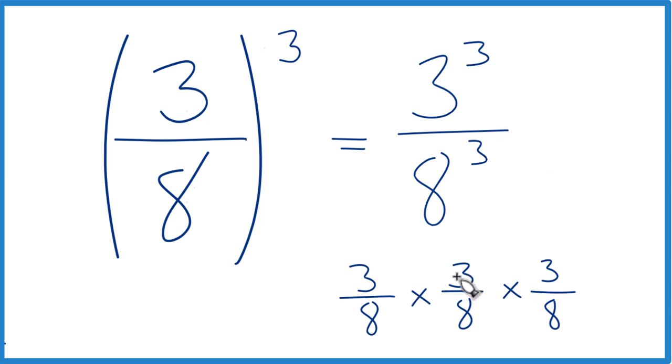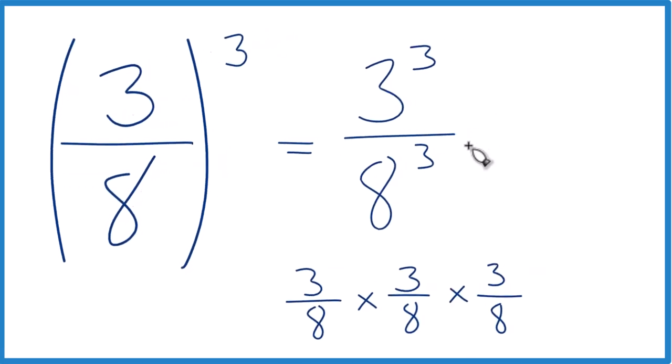So we have 3 times 3 times 3, that's our 3 cubed. 8 times 8 times 8, that's our 8 cubed. So 3 times 3, that's 9. 9 times 3, that equals 27. So 8 times 8, that's 64. And 64 times 8 is 512.